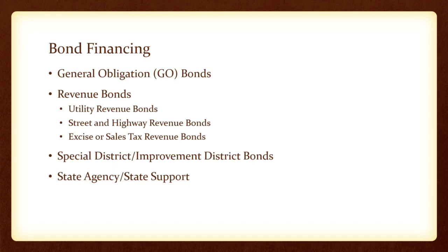There is also the ability to issue bonds under special improvement districts, which have been used in the past for street improvements or running infrastructure into underserved areas. State agency support is another option, including WIFA programs for water and wastewater projects. The city's history with general obligation bonds includes: fire apparatus in 1984 and in 2006 — $23.5 million for public safety facilities, $4 million for library facilities, and $19.5 million for parks and recreation improvements. The commitment to voters in 2006 was to keep the secondary tax levy under $1.50 per hundred of assessed valuation, and the highest it reached was roughly 68 cents.